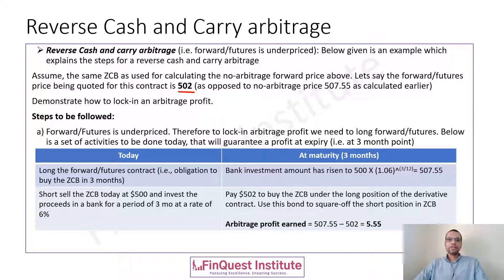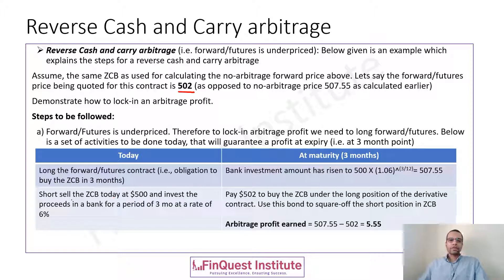Since these two levels are not matching, there is an arbitrage opportunity and we follow the buy low and sell high principle. Here we'll go long — that is, purchase the derivative — and we'll see what actions we do today in order to lock in the profit. Firstly, take a long position in the forwards or futures contract, which is an obligation to purchase the zero coupon bond in three months time.